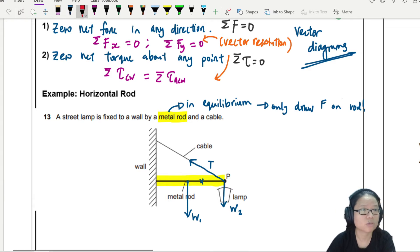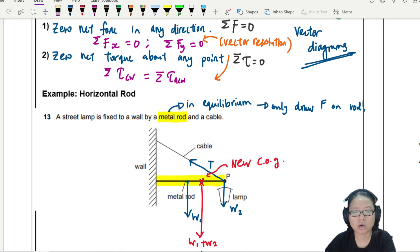But we can be sure that the center of gravity is shifted towards the lamp. So let's say now this is your new center of gravity. So here, I'm going to change color. This one is the new center of gravity. So we'll call this W1 plus W2. And then just label here. This is the new COG. So the W1, W2, I'm not going to keep it because I want to keep my diagram clean.